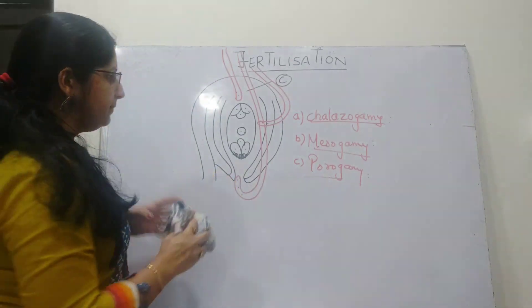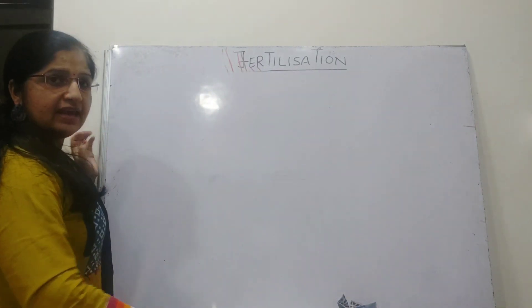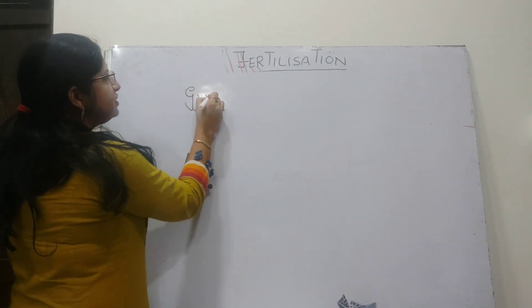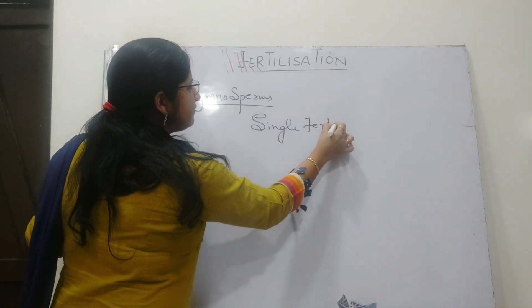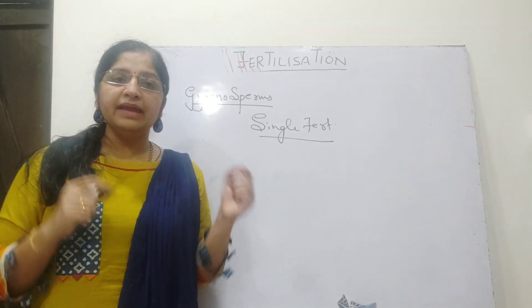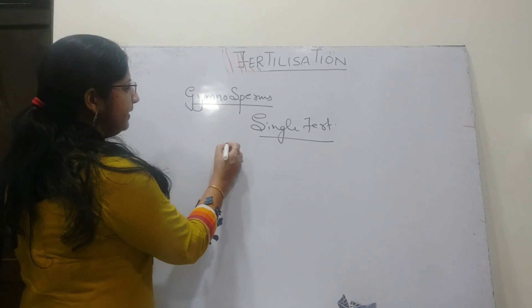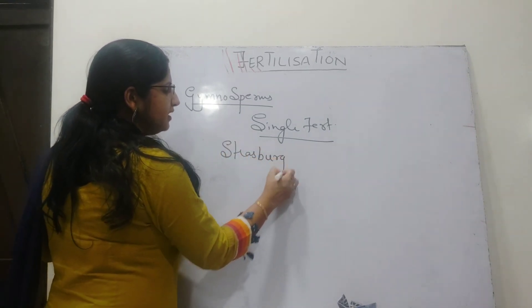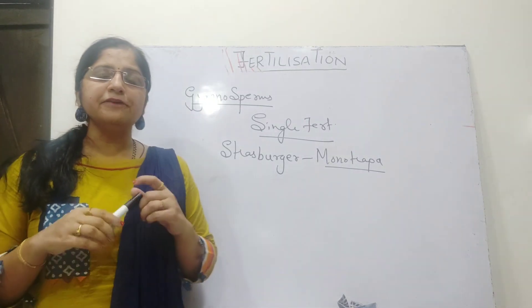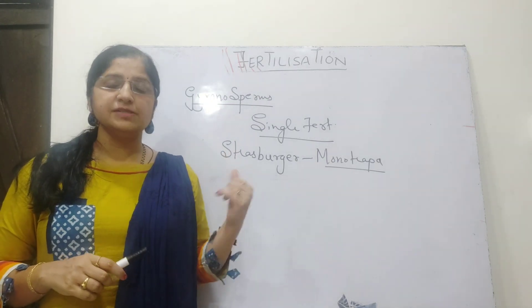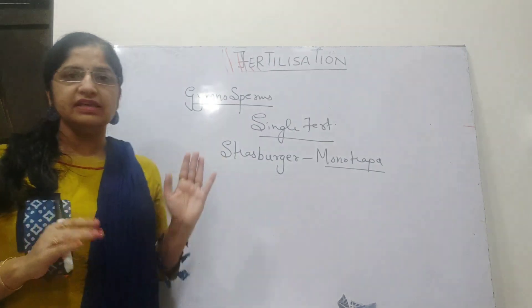We have to discuss a very important point: how does fertilization happen in both gymnosperms and angiosperms? In gymnosperms, single fertilization is achieved. Single fertilization means there is only a single male gamete, and that male gamete fuses with the female gamete, resulting in the formation of a diploid zygote. This was first studied by the scientist Strasburger in Monotrapa. The reason is that gymnosperms carry only a single male gamete — there is no double gametes process in gymnosperms.